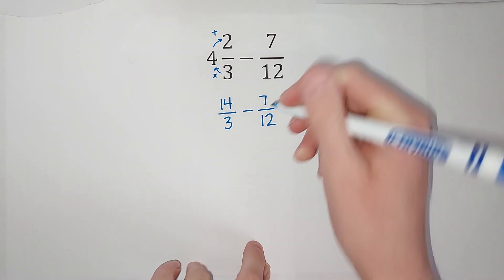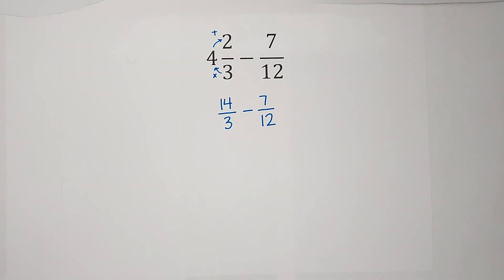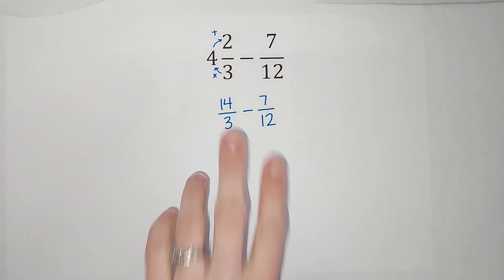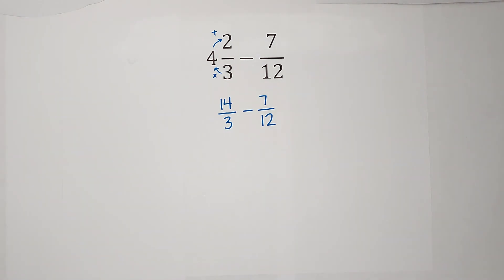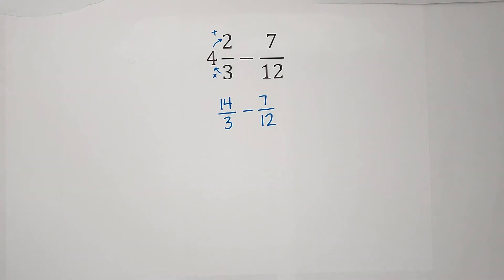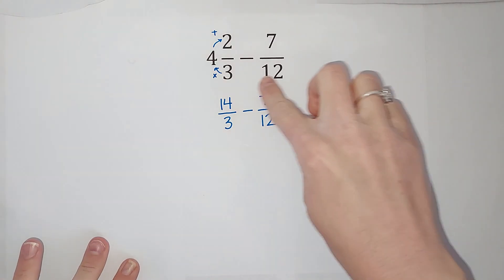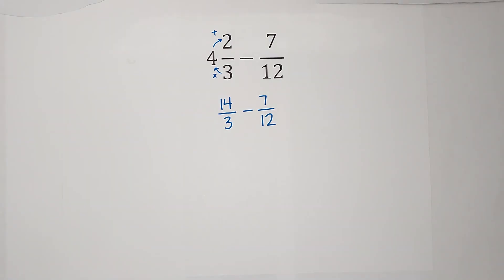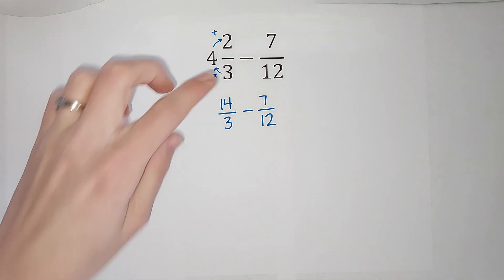When we subtract fractions, our denominators have to be the same. It's not too hard to get them the same — we think: what is the smallest number that 3 and 12 both go into? The smallest number they both go into is 12. So good news: we don't have to change this one, it is already over 12. But we do need to change this one.